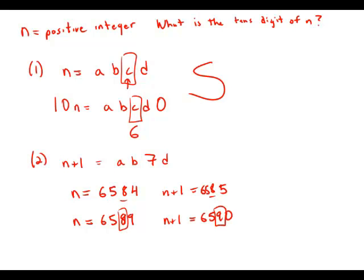and we'd get a different tens digit. When the units digit is 9, adding one changes the tens digit because you carry the one. And because we don't know anything about the units digit, it might be nine, it might not be nine. We don't know.